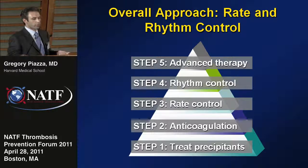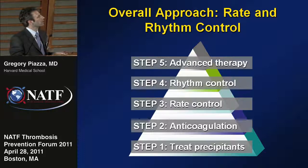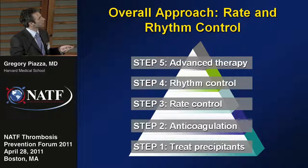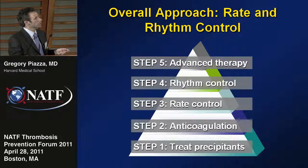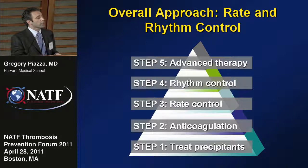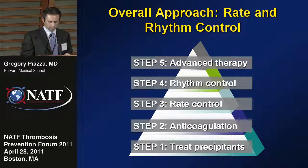For an overall general approach to rate and rhythm control: the first step and foundation of treatment is to make sure that precipitants are treated. If the patient has heart failure, an exacerbation of lung disease, or thyroid disease, it's important to treat those first, as rate control, rhythm control, and advanced therapies may be less effective until the precipitant is treated. Anticoagulation is an important step for stroke prevention in appropriate patients. Most patients start with a rate control strategy; if still symptomatic, a rhythm control agent can be added. For patients who fail both, advanced therapies can be pursued.